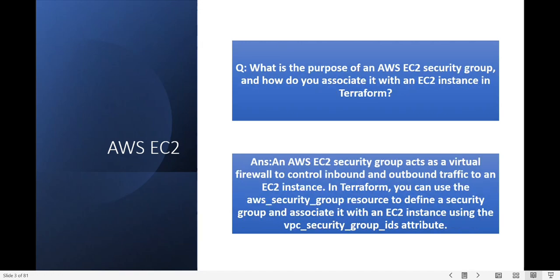The next question is: what is the purpose of an AWS EC2 security group and how do you associate it with an AWS EC2 instance in Terraform? An AWS EC2 security group acts as a virtual firewall — it controls inbound and outbound traffic to your EC2 instance. In Terraform you can use the AWS security group resource to define the security groups associated with the EC2 instance.